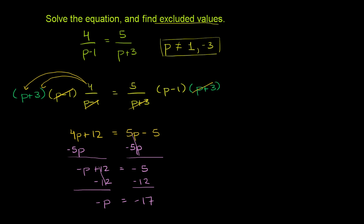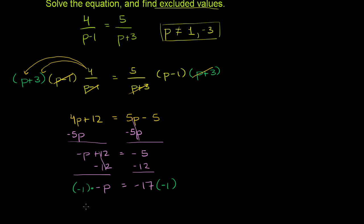And we're almost done. We can multiply both sides by negative 1, or divide both sides by negative 1, depending on how you want to view it. And we get negative 1 times negative p is, that's positive p is equal to 17.